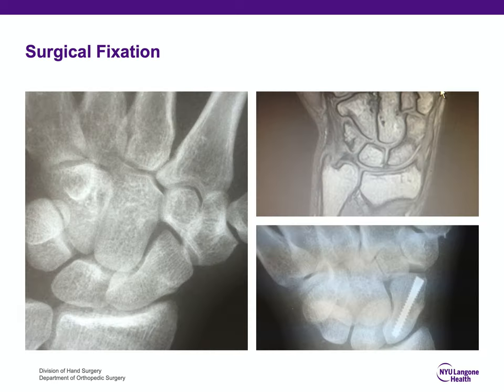This is an example of a patient with wrist pain after a fall. There was a hint of a scaphoid fracture on PA x-ray, MRI confirmed a scaphoid waist fracture, and this is the screw fixation after 6 to 8 weeks with the bone healed.